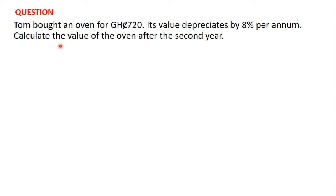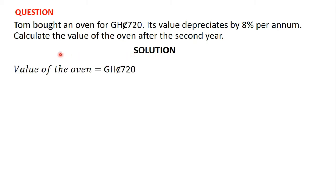We are being asked to find the value of the oven after the second year. The cost price of the oven, or the amount Tom paid, is 720 Ghana cedis. In order to find the value after the second year, we will first have to find the value of the oven after the first year.